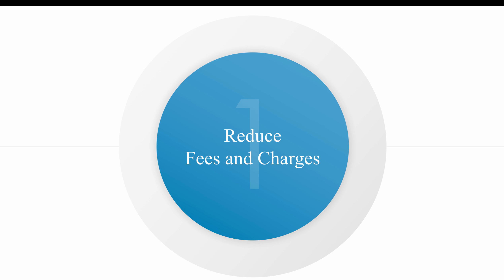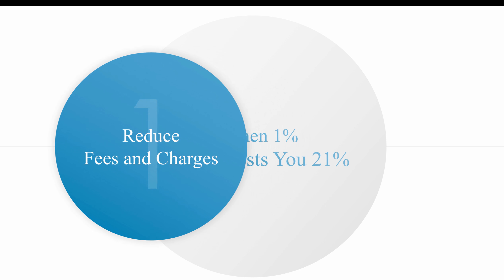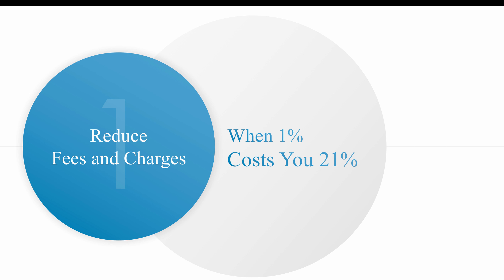Four ways to increase annuity income: specifically, we're going to talk about reducing fees and charges, eliminating volatility and why the power of zero is so important, avoiding income riders, and how to maximize withdrawals. So let's jump in with reducing fees and charges. In this section you're going to learn when 1% costs you 21%. This section is probably the most important because it truly establishes your authority. If you carefully master the fees and charges section, you will have a command over these people and their respect. So let's go ahead and move forward.